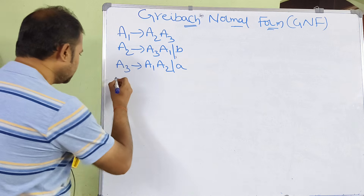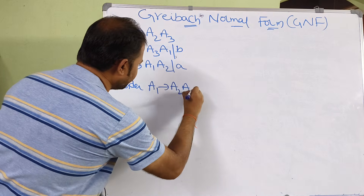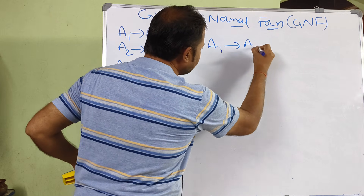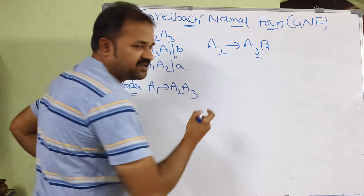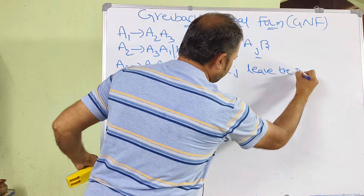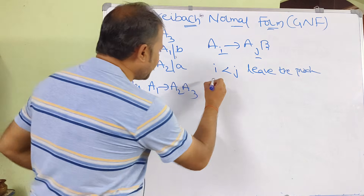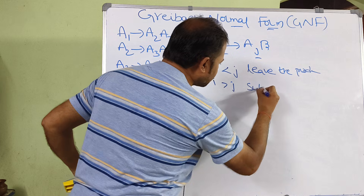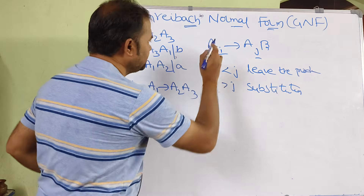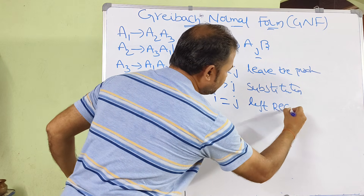Now let us see the next step. We have to consider the productions. We know the rule: if the production is in the form AI produces AJ beta, then we compare I and J values. If I is less than J, leave the production now and do the substitution later. If I is greater than J, substitute AJ value in AI immediately. If I is equal to J, that specifies left recursion, so we need to eliminate the left recursion.